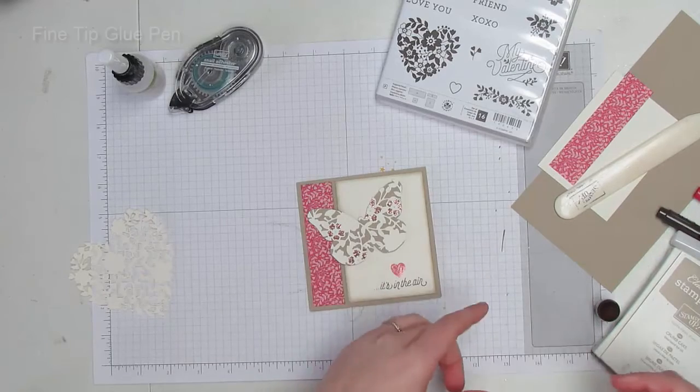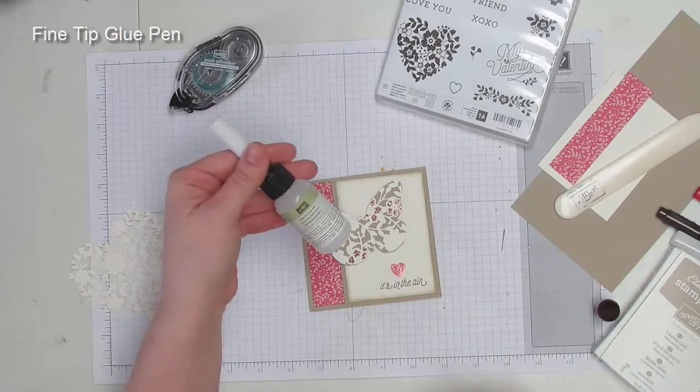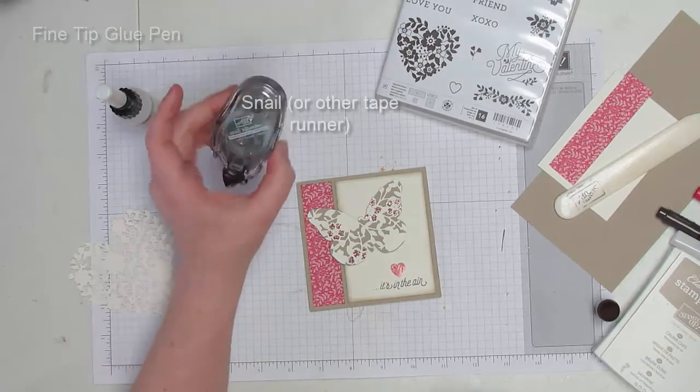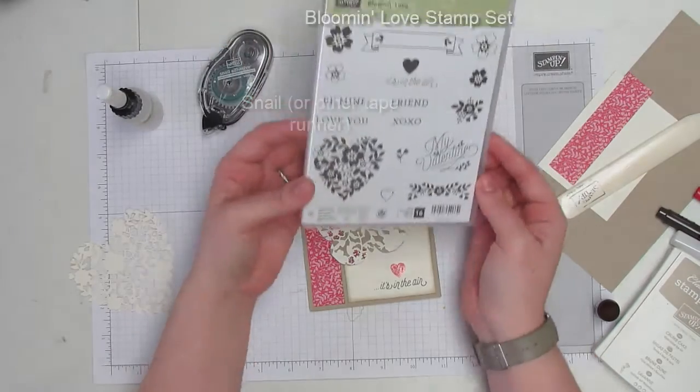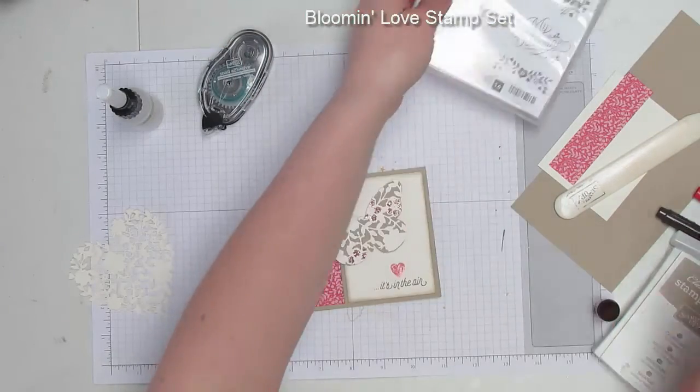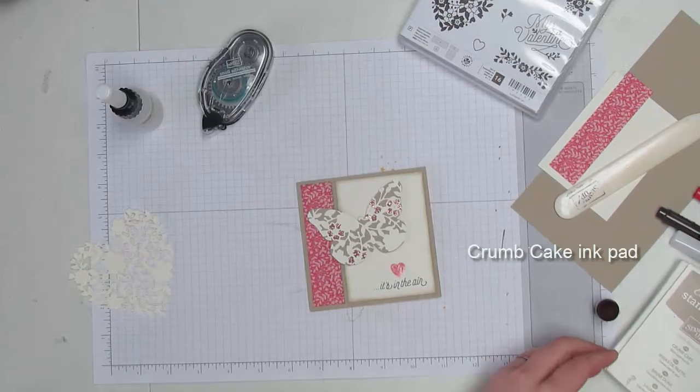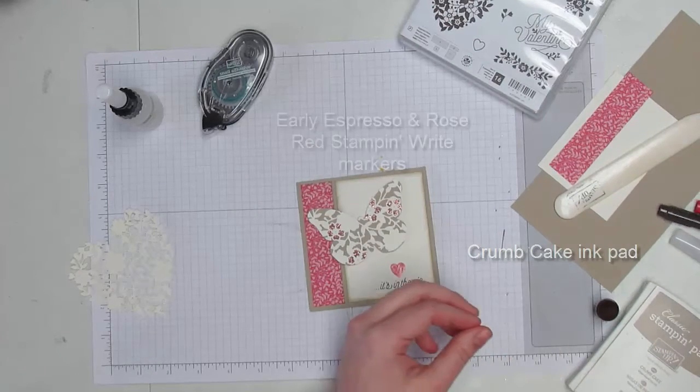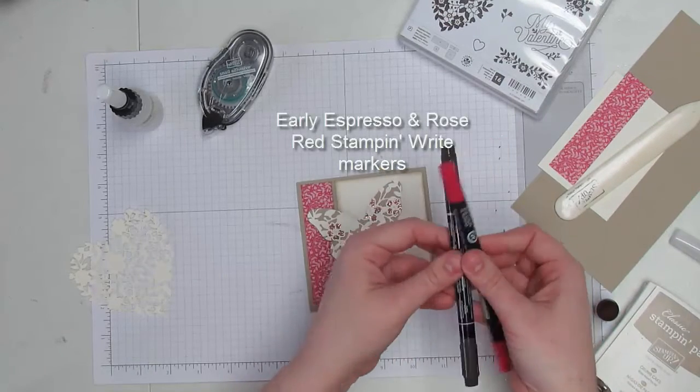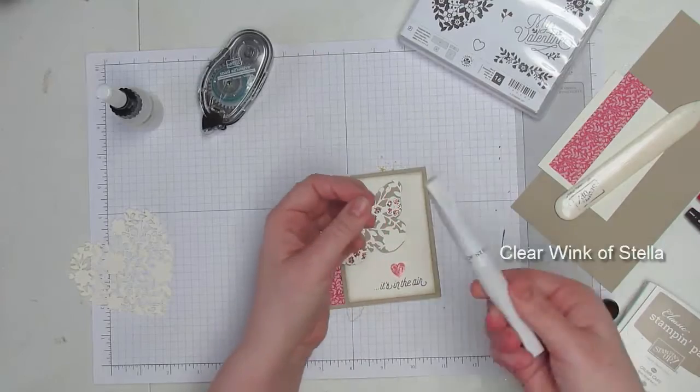Now if you're playing along at home, here's what you're going to need. You're going to need the fine tip glue pen, tape runner, this Bloomin' Love Stamp Set, some Crumb Cake ink, Rose Red and Early Espresso Markers, and Wink of Stella.